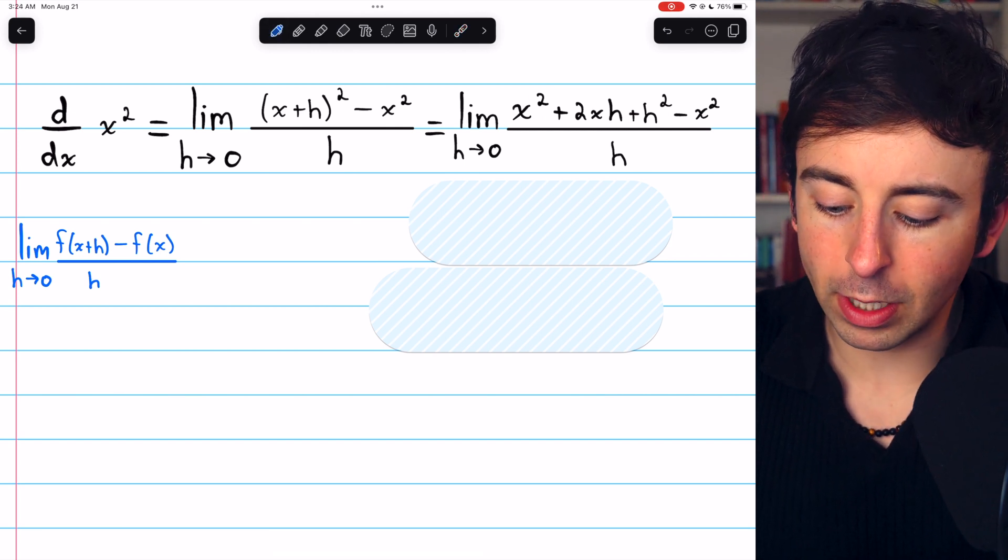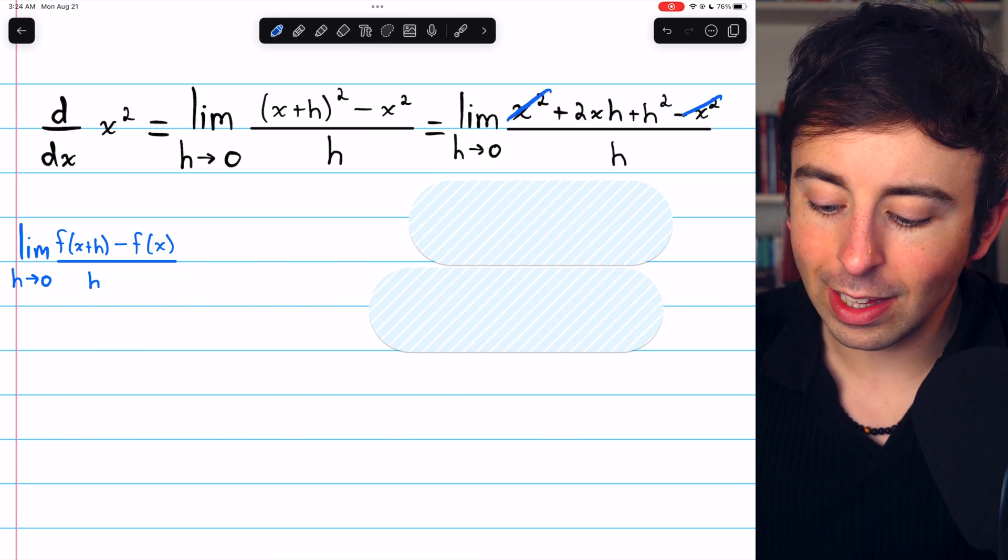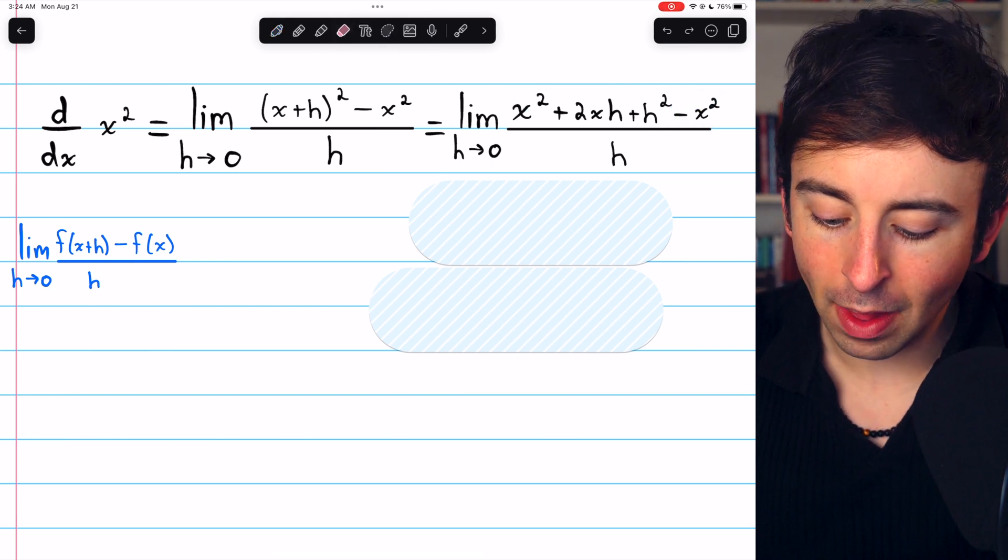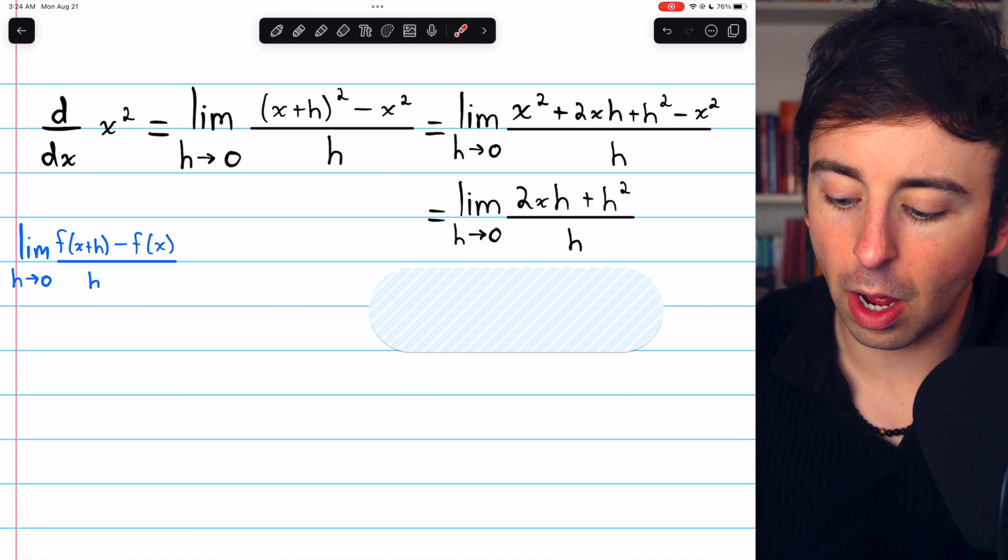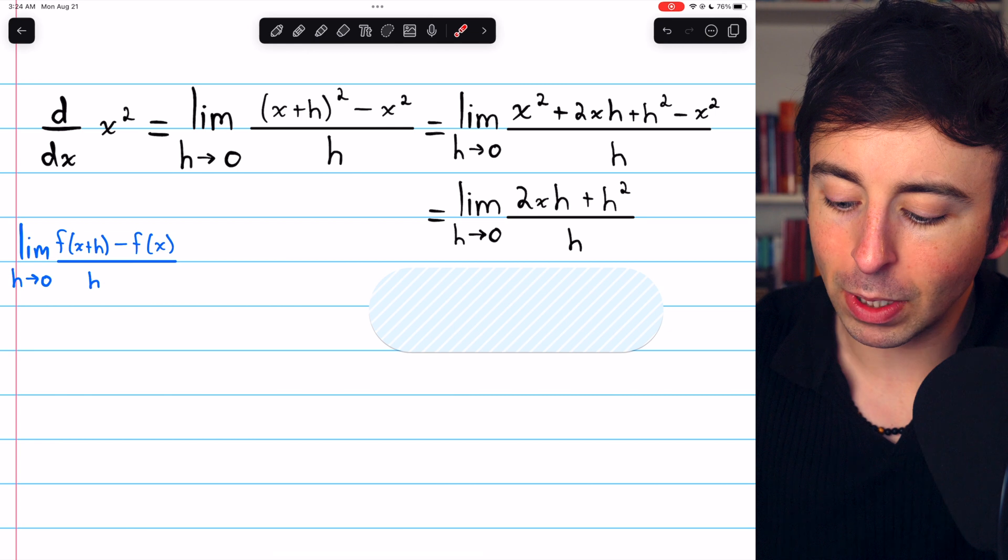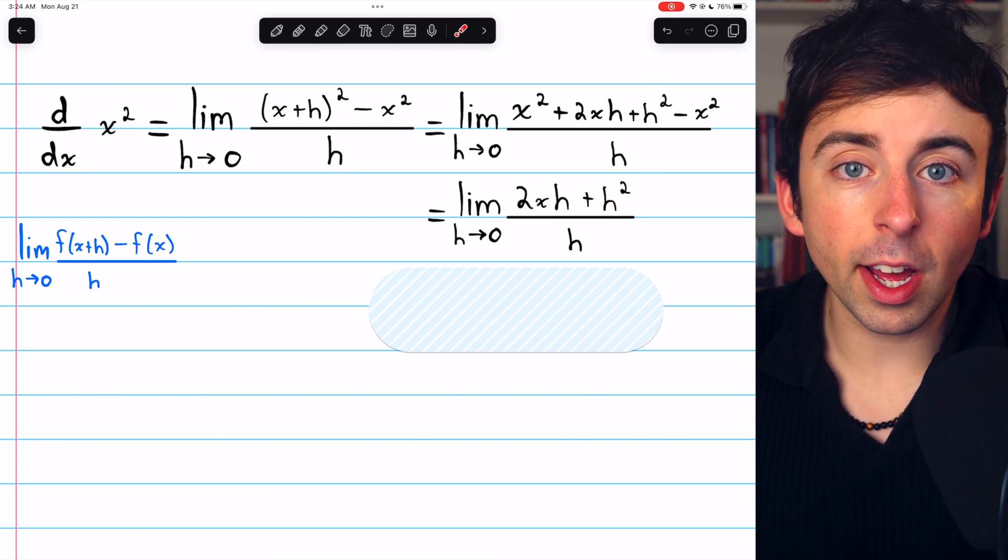Now, this works out pretty nicely. The x squared on the end cancels out with the minus x squared that's on the other end. And so this just leaves us with the limit as h approaches zero of 2xh plus h squared, all over h. And then we're pretty much done.